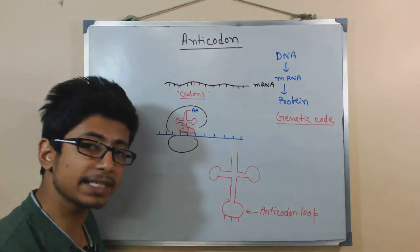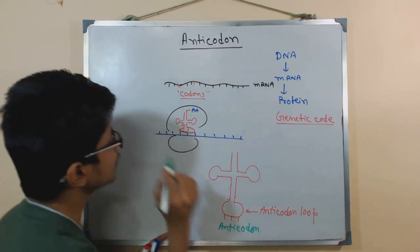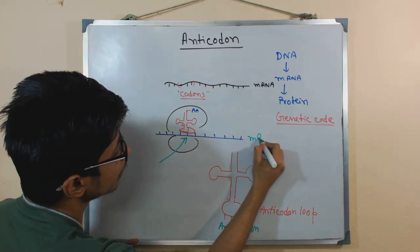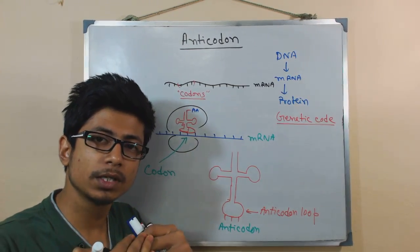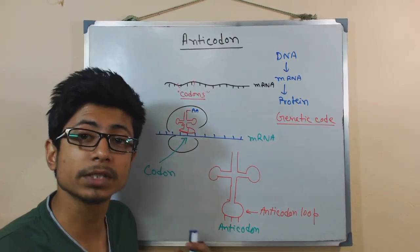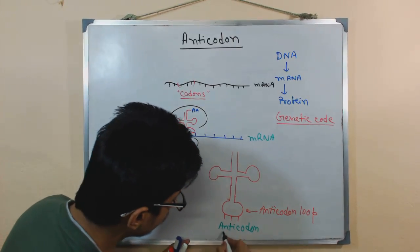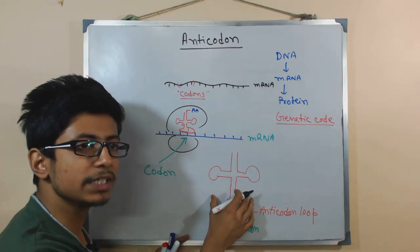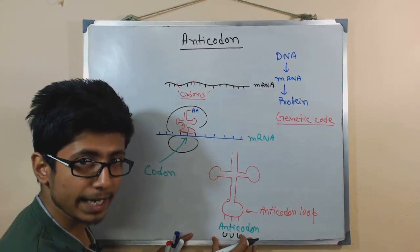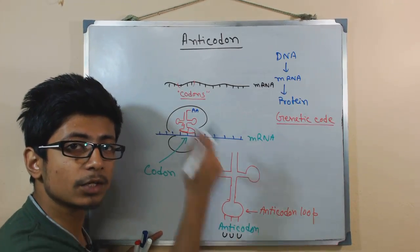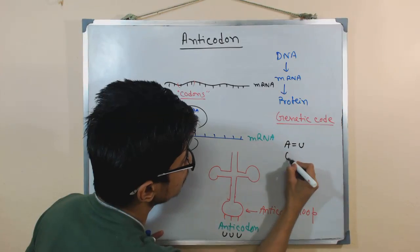The anticodon is a three nucleotide stretch found in a specific loop of tRNA called the anticodon loop. This loop at the bottom of tRNA contains three nucleotides termed the anticodon. The three nucleotide sequences in the mRNA are the codons. Codon-anticodon pairing follows Watson-Crick base pairing rules — A pairs with U and G pairs with C.